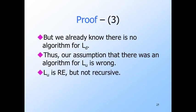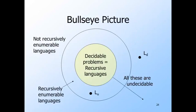So here is our improved version of the universe of languages. We still have the decidable problems, or equivalently recursive languages, in the center. Outside, there are two kinds of undecidable problems. The second ring is the languages that are recursively enumerable but not recursive — we now have a concrete example, L sub U, the universal Turing machine language. And beyond that are the not recursively enumerable languages, of which we have one concrete example, L sub D.